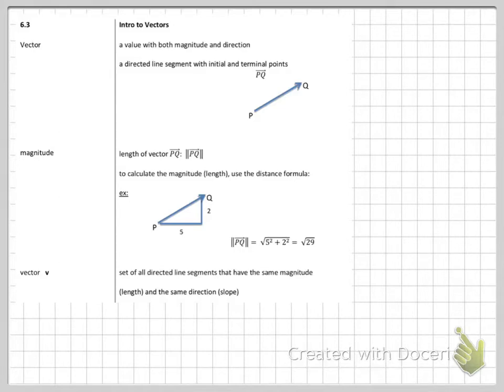Okay, this chapter we're going to introduce, just kind of touch on a lot of different things that use our trig skills. For this section, we are introducing vectors. So a vector is a value with both magnitude and direction. It's a directed line segment with an initial and a terminal point. So having magnitude and direction is going to be big. It's going to be how we kind of define our vectors.